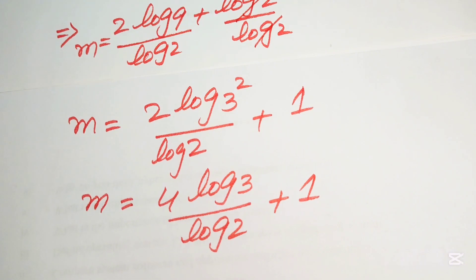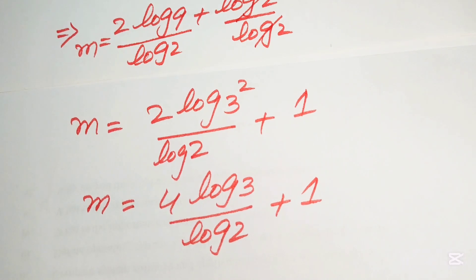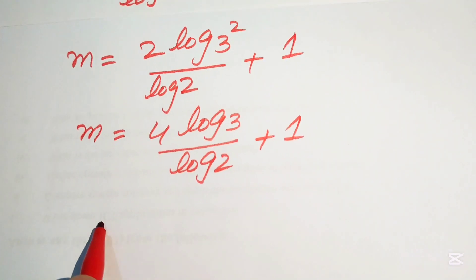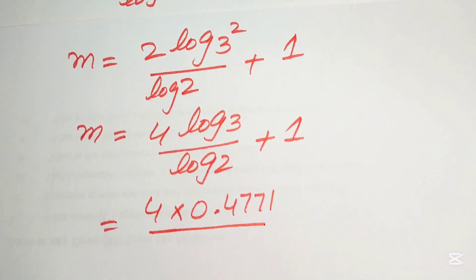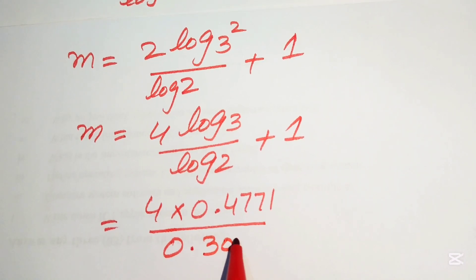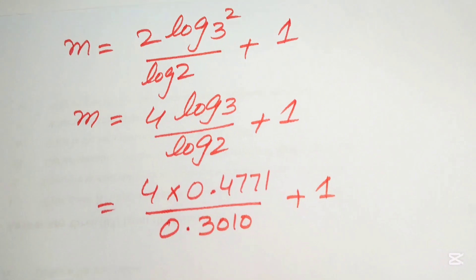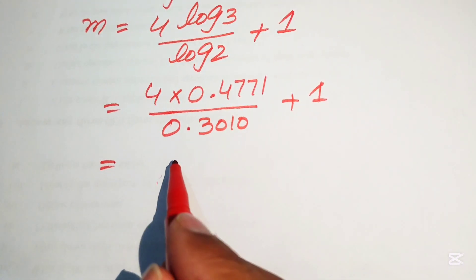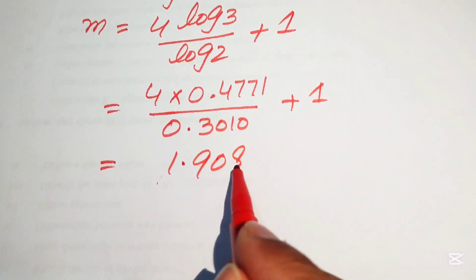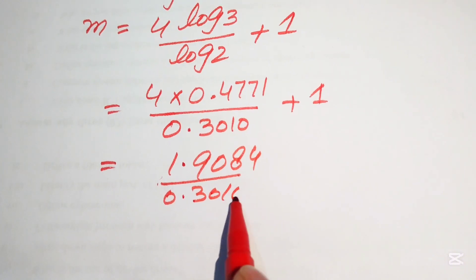Now we substitute the numerical values. The value of log(3) is 0.4771, and the value of log(2) is 0.3010. So m equals 4 times 0.4771 divided by 0.3010, plus 1. Multiplying 4 by 0.4771 gives 1.9084, so we have m equals 1.9084 divided by 0.3010, plus 1.